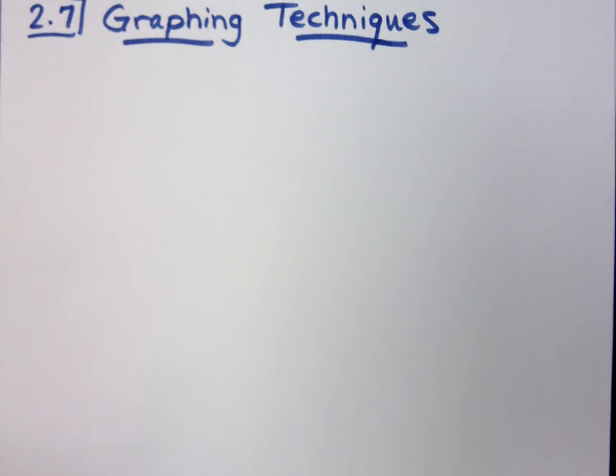Last time we talked about a lot of the parent functions, the basic graphs that we're going to have. We talked about the square root function, the squaring function, cubing function, absolute value function - a lot of basic guys that we need to know the shapes of.